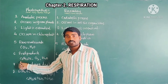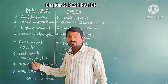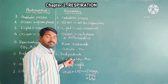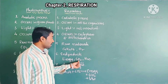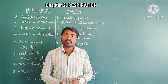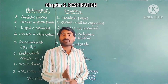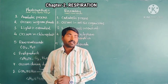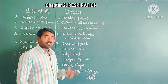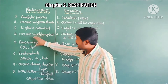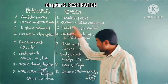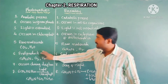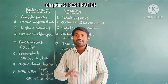End products of photosynthesis are glucose, oxygen, and water. End products of respiration are energy, carbon dioxide, and water. Importantly, the raw materials required for photosynthesis are the end products of respiration, and the raw materials of respiration are the end products of photosynthesis — they are vice versa.